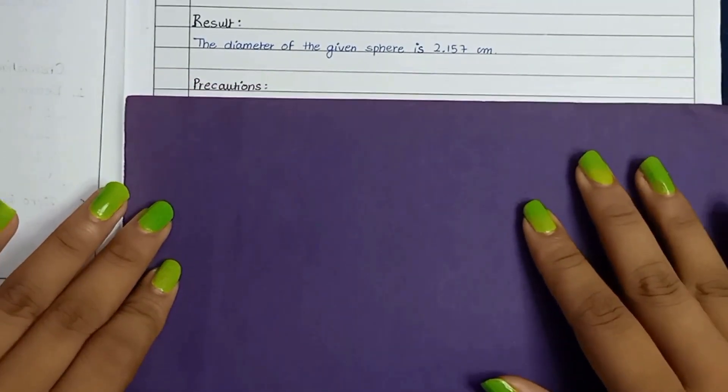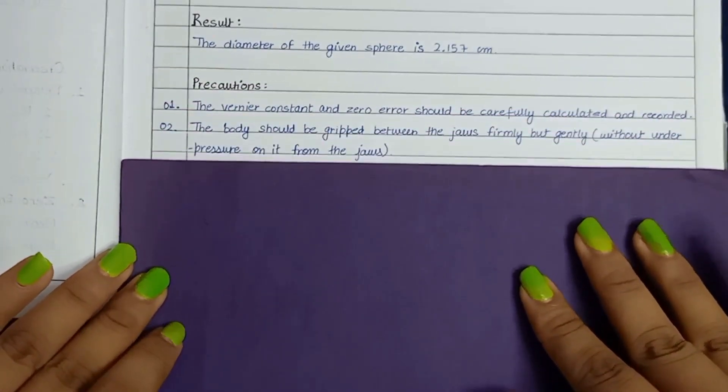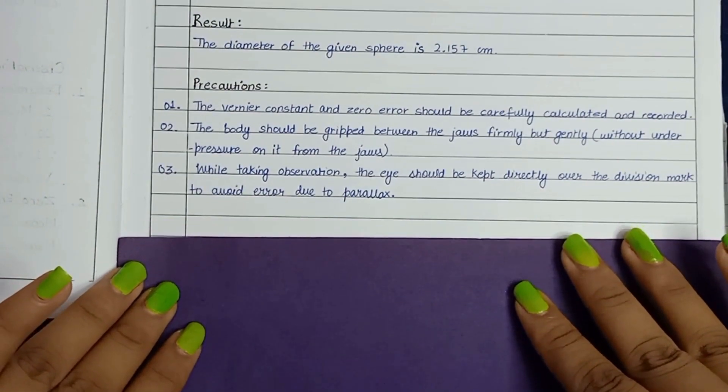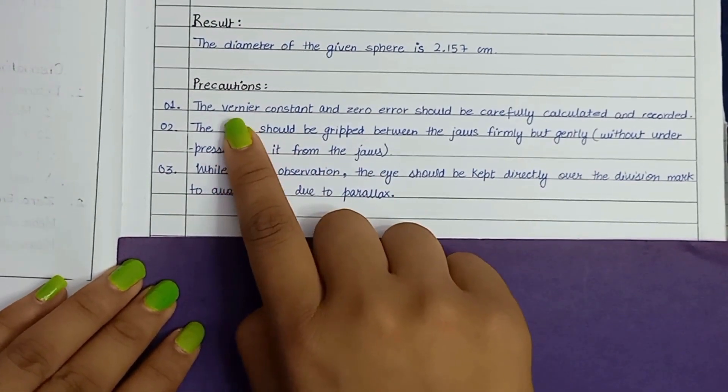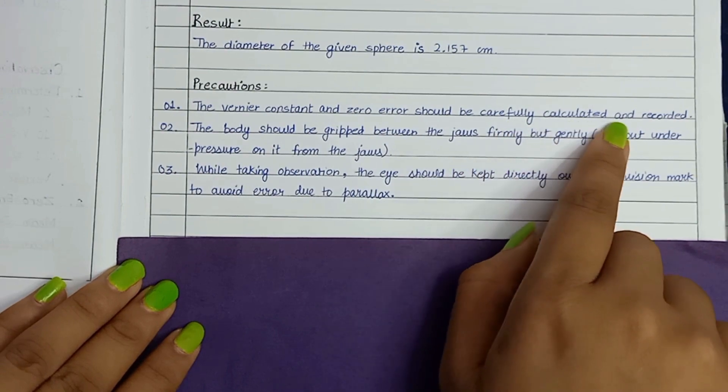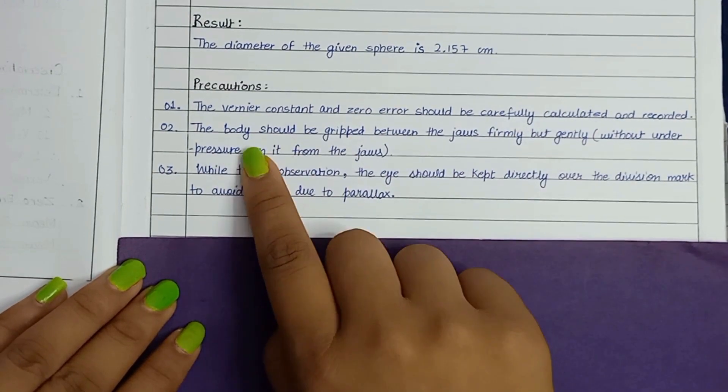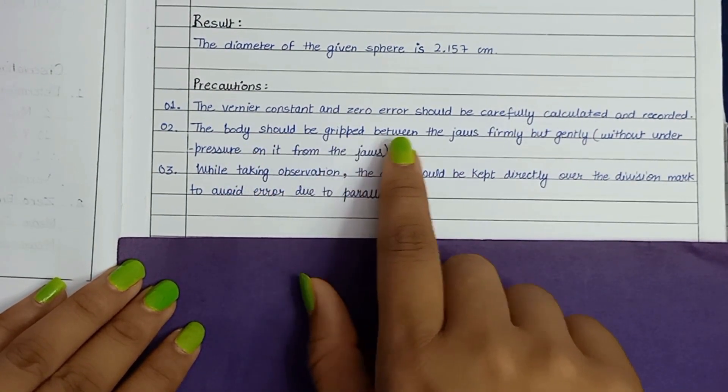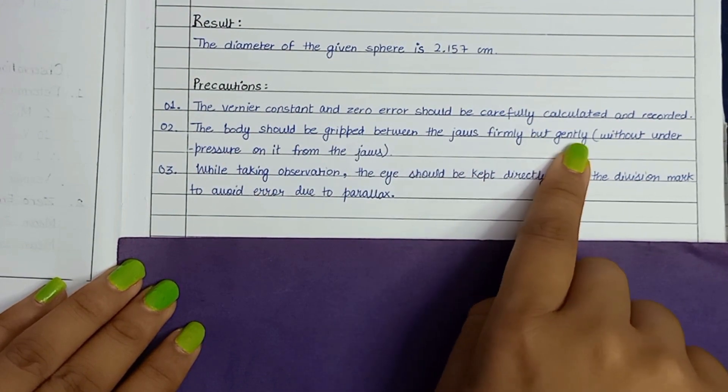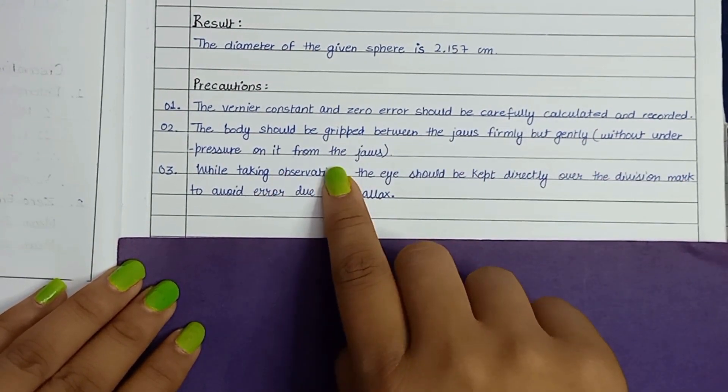Next, precautions. These are the precautions of this experiment. First, the vernier constant and zero error should be carefully calculated and recorded. Second, the body should be gripped between the jaws primarily but gently without undue pressure on it from the jaws.